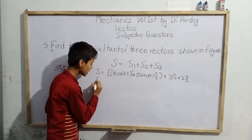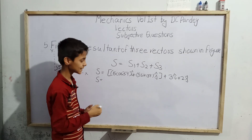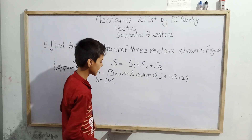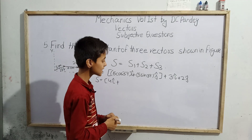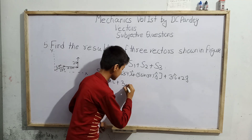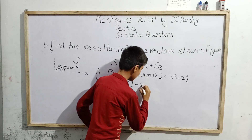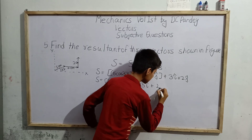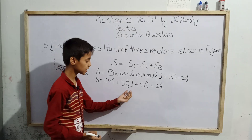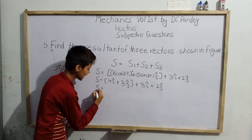Now we solve for the values. Five cos 37° equals 4, so we get 4 i-hat. Five sin 37° equals 3, so we get 3 j-hat. So S = 4 i-hat + 3 j-hat + 3 i-hat + 2 j-hat.